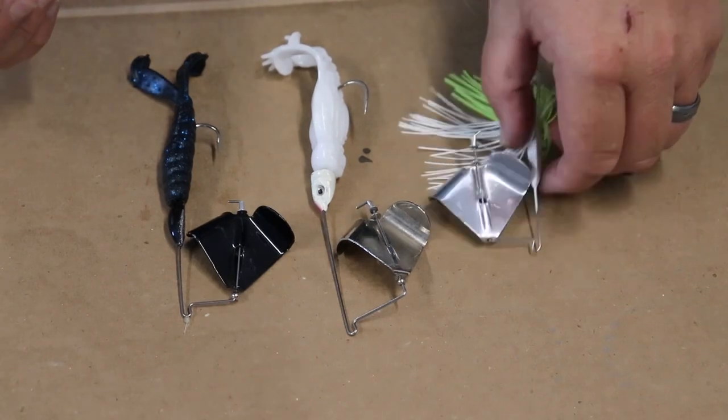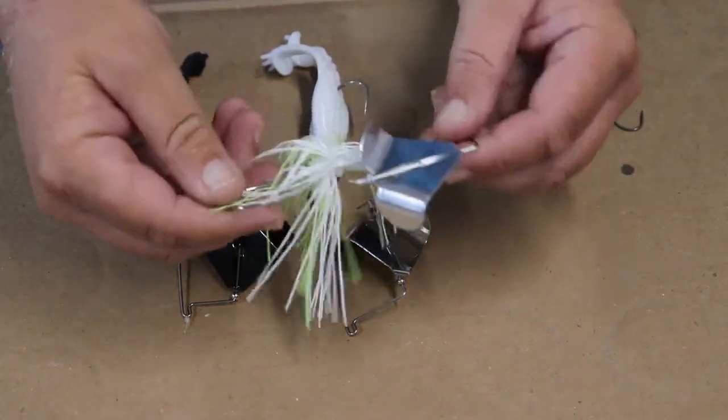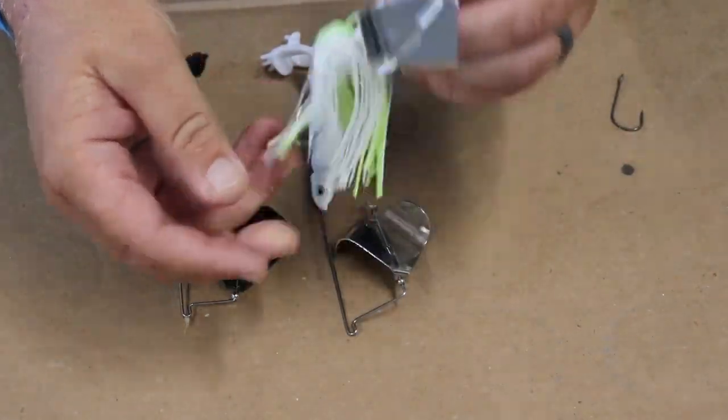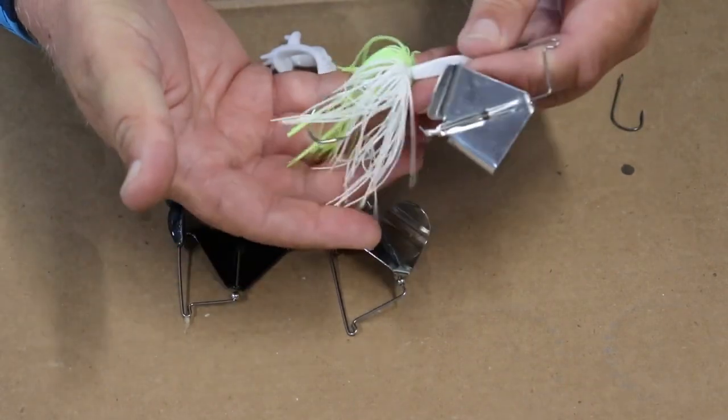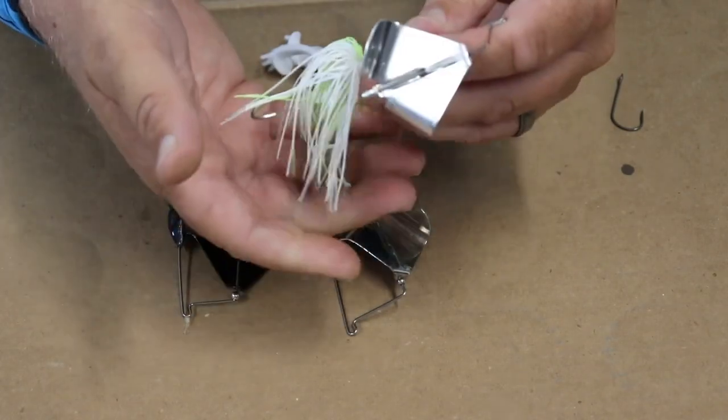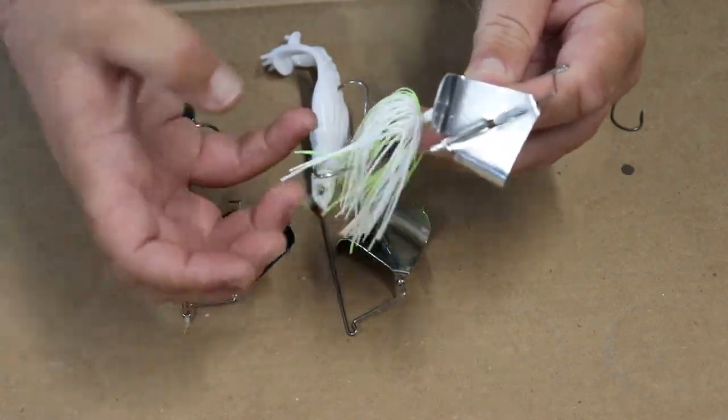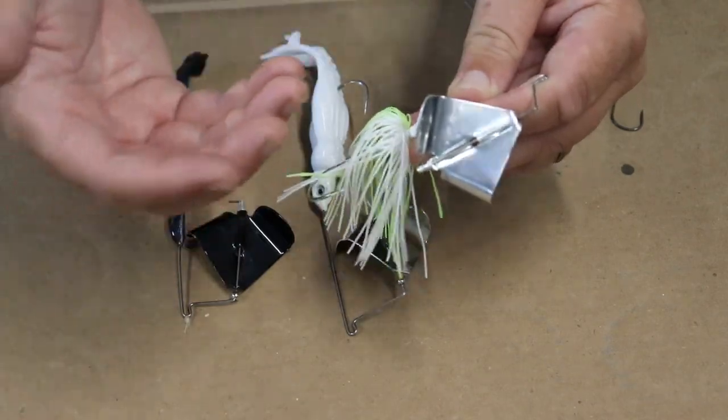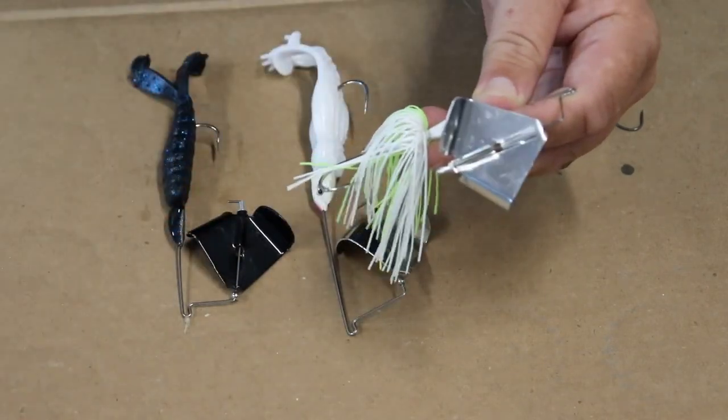All right, so here we have the traditional buzzbait. For years, all buzzbaits really came with this traditional style skirt. It creates a lot of billowing action, gives a good profile and all that. This was the traditional way of fishing these buzzbaits.